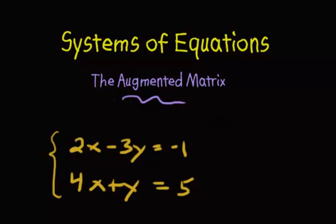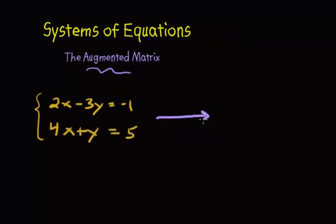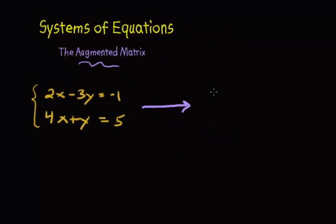So, here's what we're going to do. We're going to draw a line over here and set it up into a matrix. Now, a matrix starts off with having a left bracket. Right now, all I'm going to do is rewrite the equation 2x minus 3y equals negative 1. Now, the augmented matrix is going to represent this equation, but it's just going to get rid of the variables, anything that's not a number.